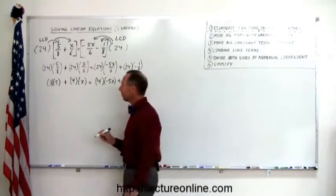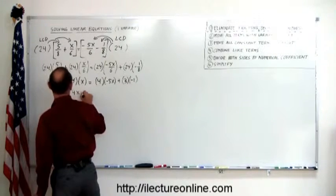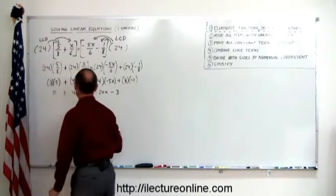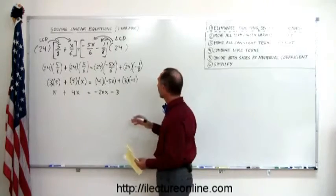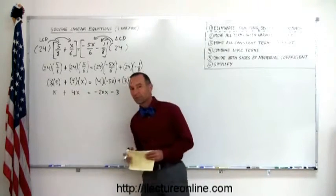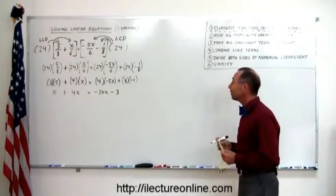And then if we multiply these out we get 15 plus 4x equals minus 20x minus 3. And now we have an equation like we had before, a linear equation. We have no fractions, no decimals, no parentheses, just a simple straightforward equation which we can solve in the exact same way that we have been doing.